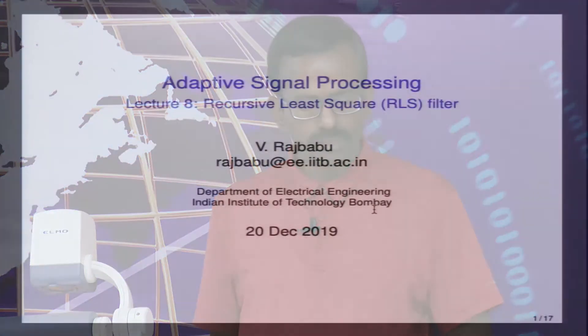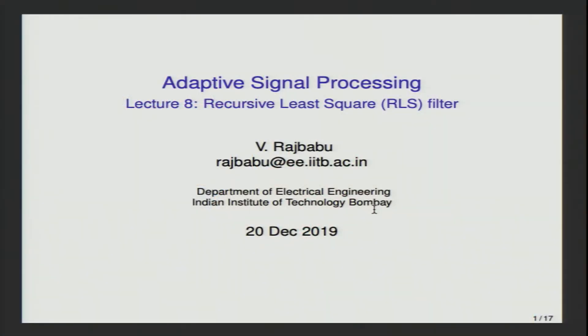Good morning and welcome to this 8th lecture in adaptive signal processing, which is on the recursively least square filter. In the previous lectures we have seen, starting with the Wiener optimal filter, how this optimal filter can be updated in a recursive fashion using the steepest descent approach, and for a more practical use we looked at the least mean square filter, which has a very simple weight update ensuring that with a proper choice of mu the weights converge and correspondingly the error gets minimized.